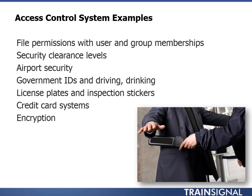Credit card systems are an access control system too. You swipe your card, but the checkout person may check your signature, and the machine communicates with a central server to make sure you have enough funds and are authorized to spend at that time of day and location. To prevent credit card fraud, this system has gotten really complex — they'll actually monitor your behavior. If you're an American resident and suddenly there's a charge in Africa, this might trigger an alarm and block access until you call and authenticate yourself. And encryption itself can be an access control system since you can't access encrypted data without a certificate.